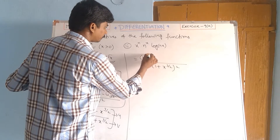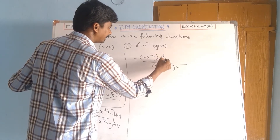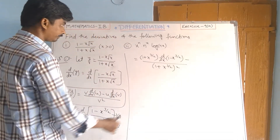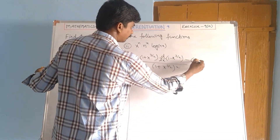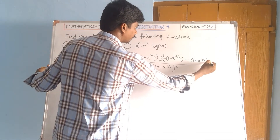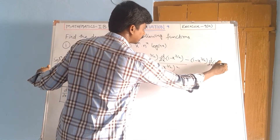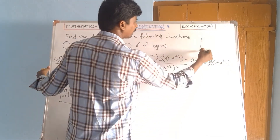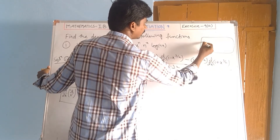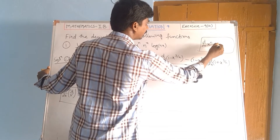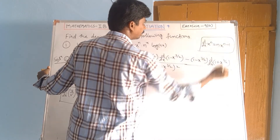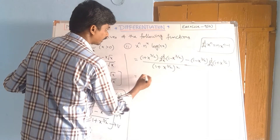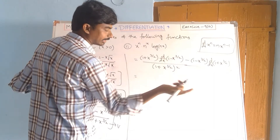That equals: (1 plus x to the power of 3/2) times dy/dx of (1 minus x to the power of 3/2), minus (1 minus x to the power of 3/2) times dy/dx of (1 plus x to the power of 3/2), all over (1 plus x to the power of 3/2) whole squared. We apply the formula dy/dx of x to the power of n equals n times x to the power of n minus 1, where n equals 3/2. The derivative of the constant 1 becomes 0.